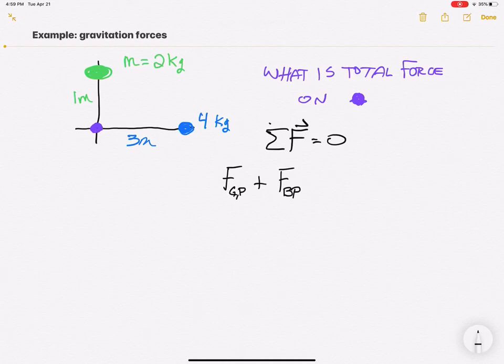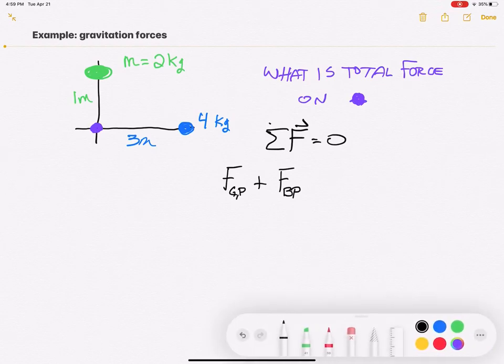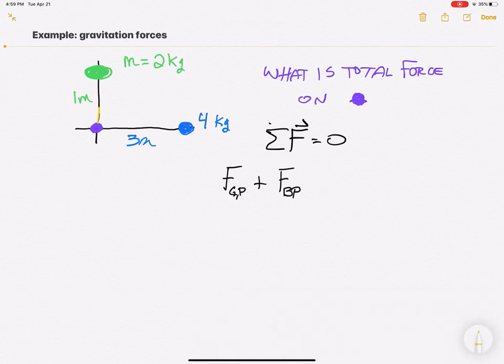What we're going to find is there's going to be, we're going to see because it's gravity and the forces are always attractive to each other, we're going to see that force of green on purple is this direction and the force of blue on purple is this direction, attractive.